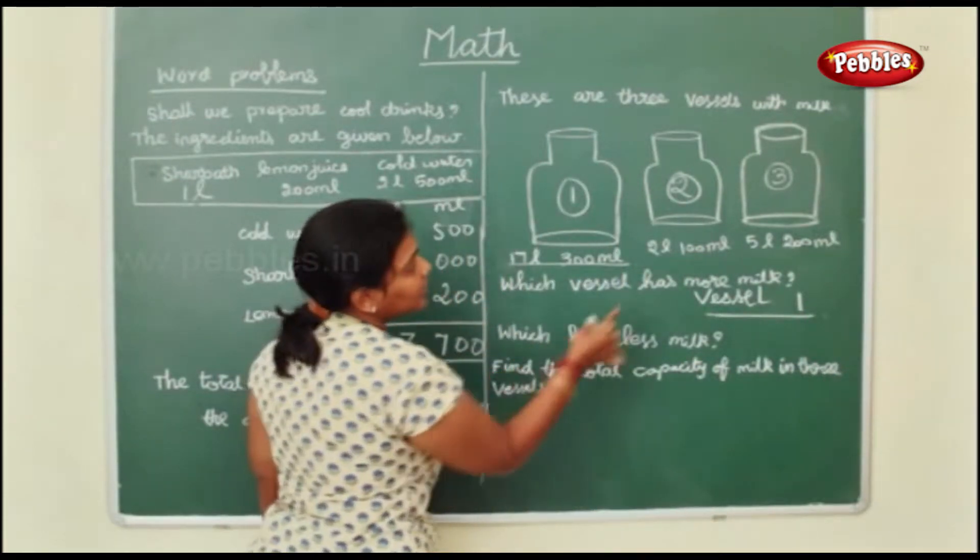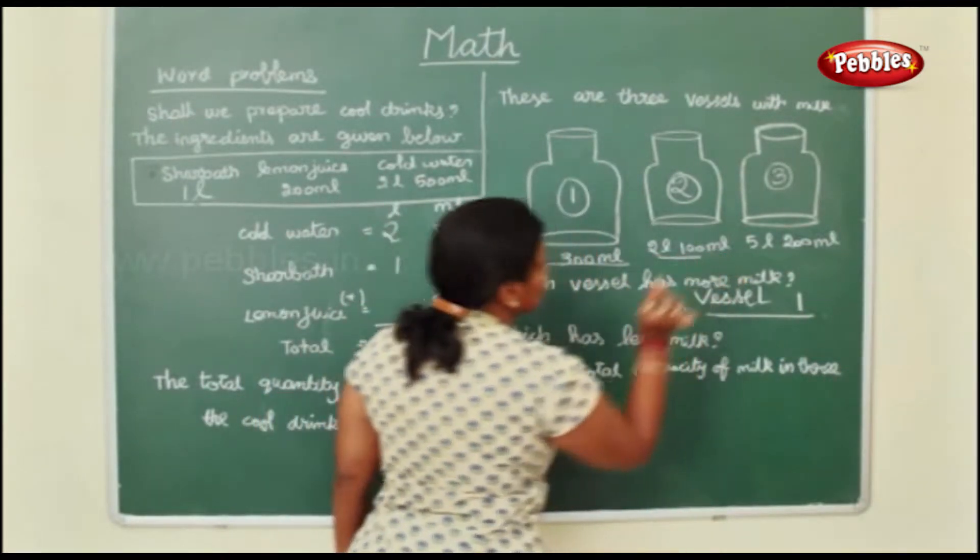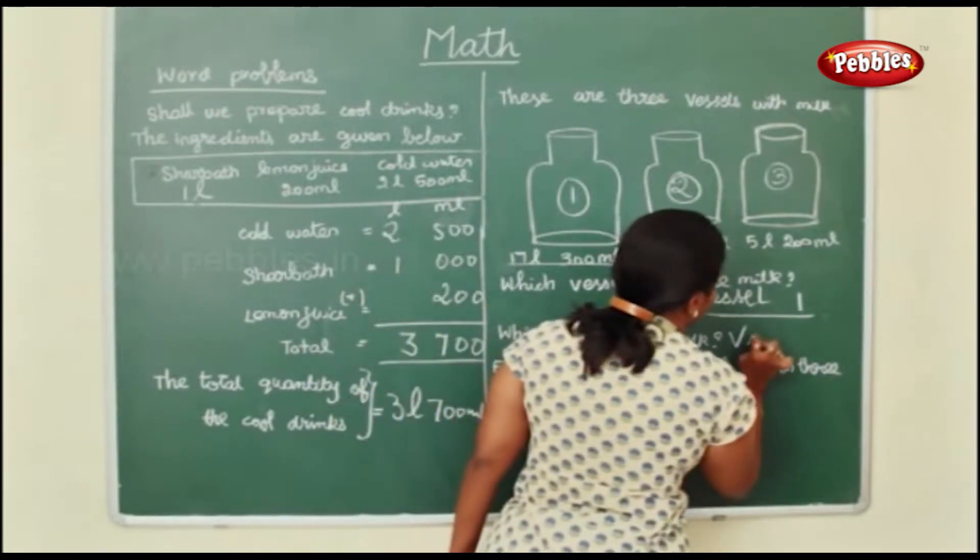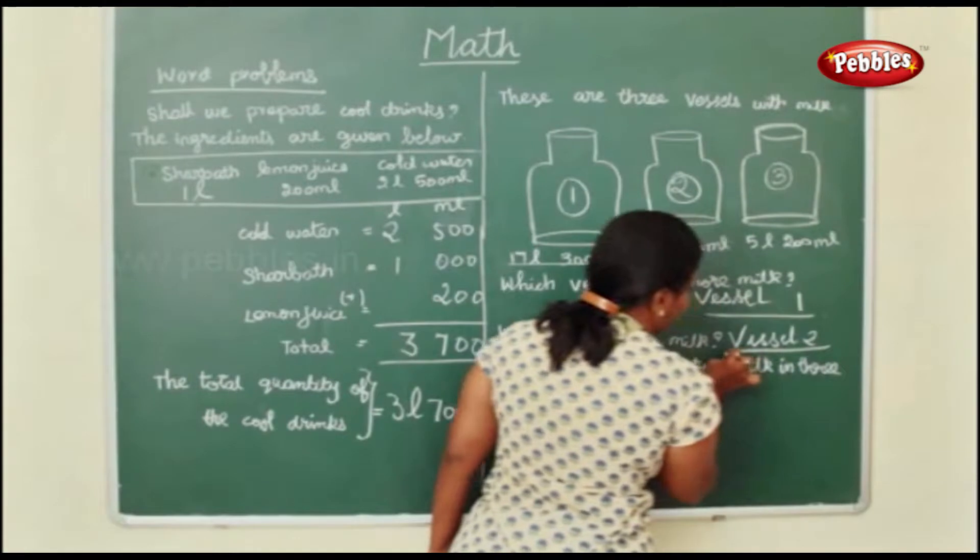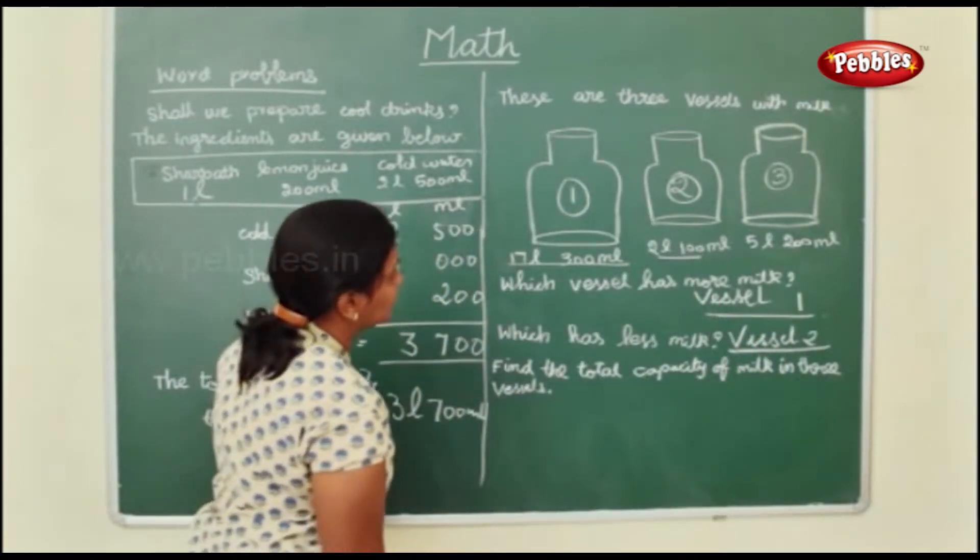Now which has less milk here? Yes. This is the less amount. Vessel 2.